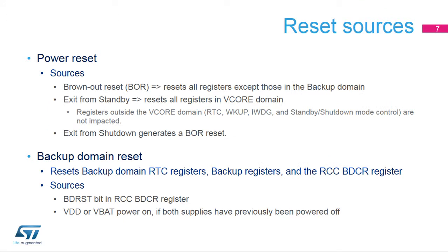The second type of reset is the power reset. The brownout reset, or BOR, resets all registers except those in the backup domain powered by VBAT, which contains the RTC and the external low-speed oscillator. When exiting standby mode, all registers powered by the regulator are reset. When exiting shutdown mode, a brownout reset is generated.